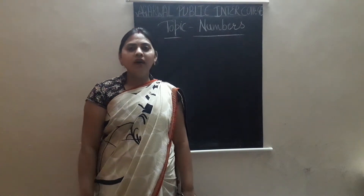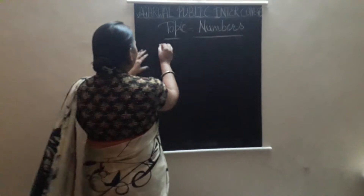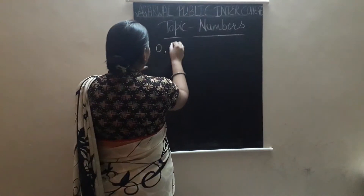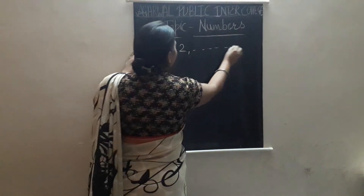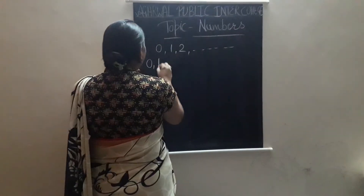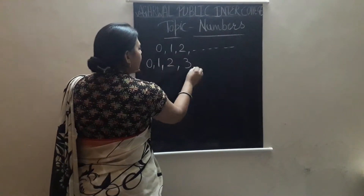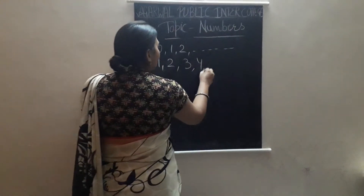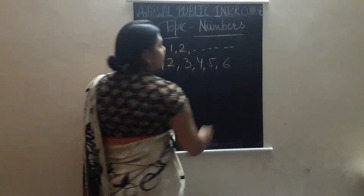Our numbers start from 0, 1, 2 and so on. If we write numbers 0, 1, 2, 3, 4, 5, 6, these are called digits.